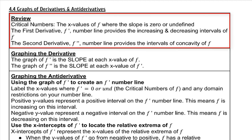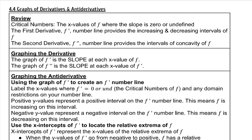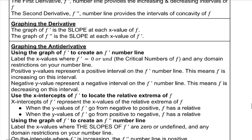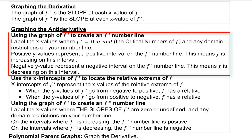Finding critical numbers, making a first derivative number line, and/or a second derivative number line are all great tools for helping us graph derivatives and antiderivatives. The graph of f prime is the slope at each x value of f — derivative means slope. The graph of f prime prime is the slope at each x value of f prime. Using the graph of f prime to create an f prime number line: if you're graphing the antiderivative, take the function you're looking at and make an f prime number line in order to help you graph the f function or the antiderivative.